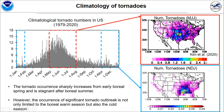The most active area is the central U.S., including Texas and Louisiana, as we call the tornado alley. However, the occurrence of significant tornado outbreaks is not only limited to the boreal warm season, but also the cold season.